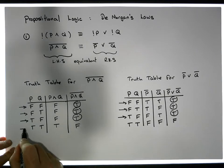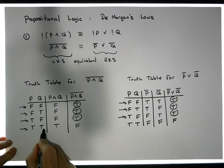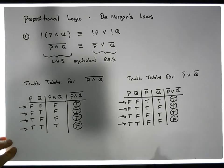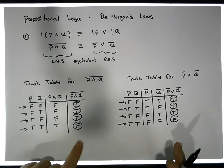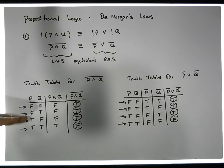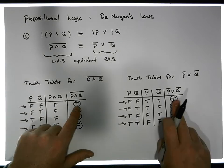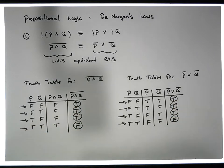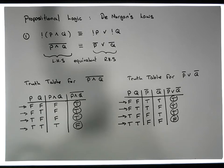When we feed in true-true we get a false, and similarly over here when we feed in true-true we also get a false. So everything is matching — on each particular possible pairing of inputs we get the same output. And this is what we call proving logical equivalence of two propositional statements.